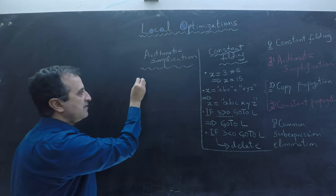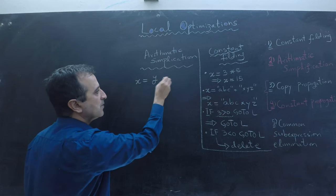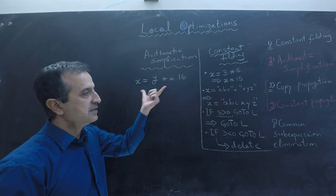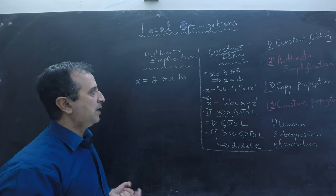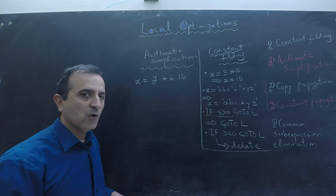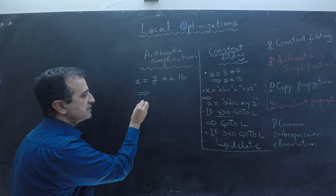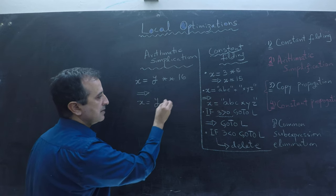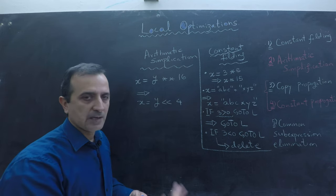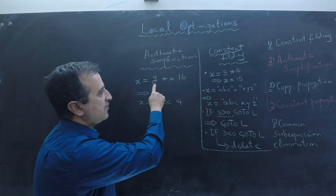If I have a line of code x equals to y raised to the power of 16, usually no assembly language has an instruction that can effectively compute the power of a number. So we transform this equation to a more assembly-friendly line of code by writing x equals to y left shift 4 times. Each left shift doubles the number, so left shifting 4 times is the same as raising y to the power of 16.